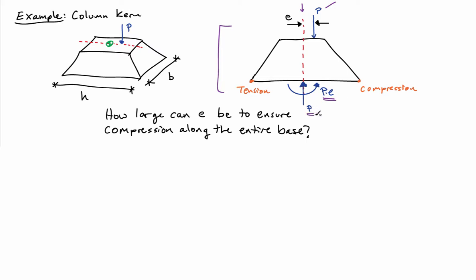Superposition tells me that I'm going to get stresses from the axial force P plus stresses from the bending moment PE. Looking at the orientation of the loads, on the right corner I'm going to have compression, and on the left corner I could possibly have tension if the moment were large enough. The question is how large can E be to ensure compression along the entire base?